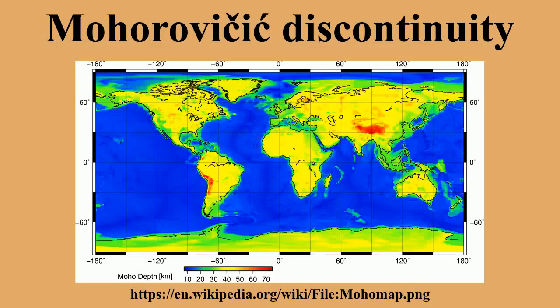The Mohorovicic discontinuity, usually referred to as the Moho, is the boundary between the Earth's crust and the mantle. Named after the pioneering Croatian seismologist Andrija Mohorovicic, the Moho separates both the oceanic crust and continental crust from the underlying mantle.